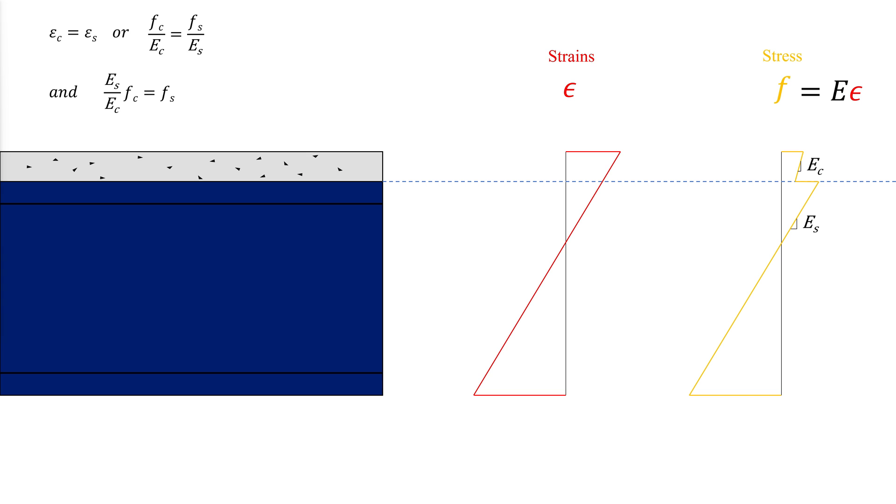AISC I2.1b gives the modulus of elasticity of concrete as the unit weight of concrete to the power of 1.5 multiplied by the square root of the 28-day compressive strength of the concrete.